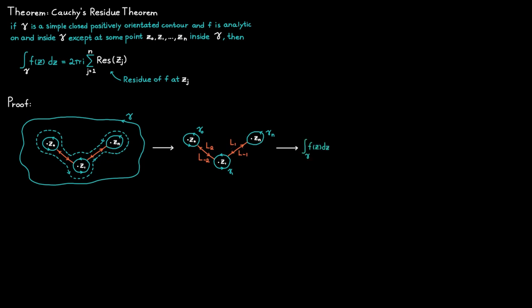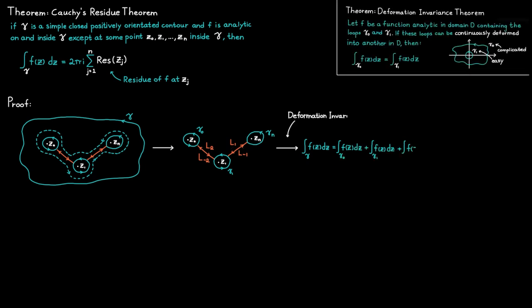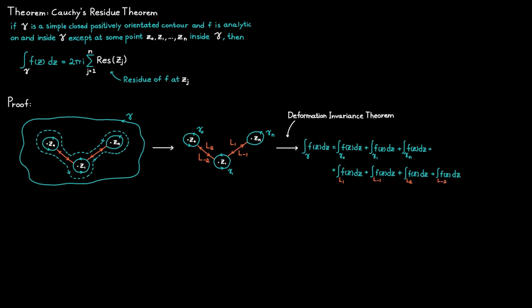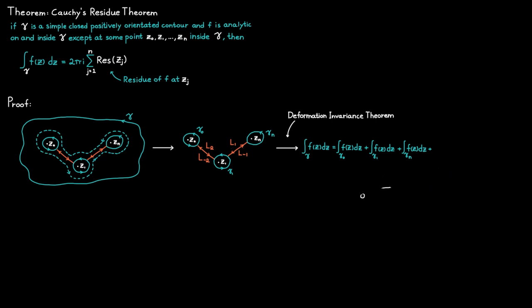Since we were able to deform one contour into another, we can now use the deformation invariance theorem. Breaking up our new contour into its smaller parts, we can see that the integrals along contours L1 and L-1 cancel each other out, since the only difference between them is the orientation. The same applies for L2 and L-2. In the end, the integral along the bigger contour gamma is simply the sum of the smaller integrals taken along the contours containing the isolated singularities.